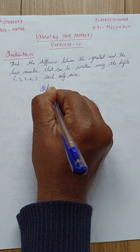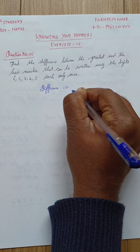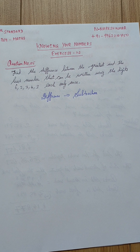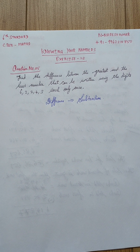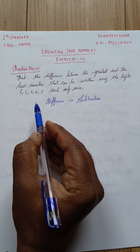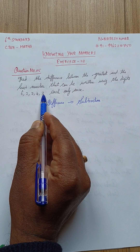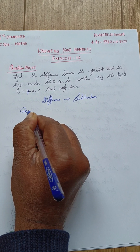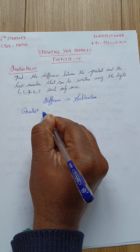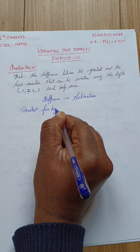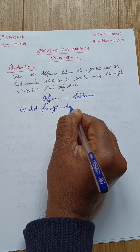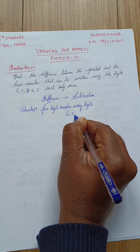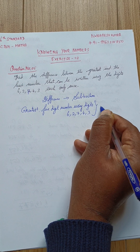Difference means subtraction. First, let's look at the greatest five-digit number. There are totally five digits: one, two, three, four, five. So we need to form the greatest five-digit number using digits 6, 2, 7, 4, 3.